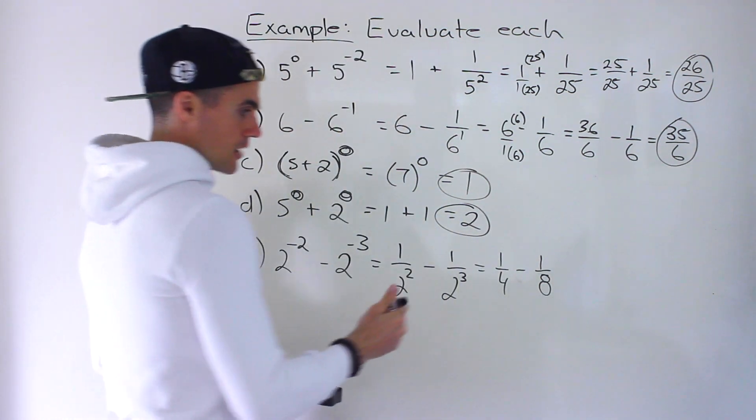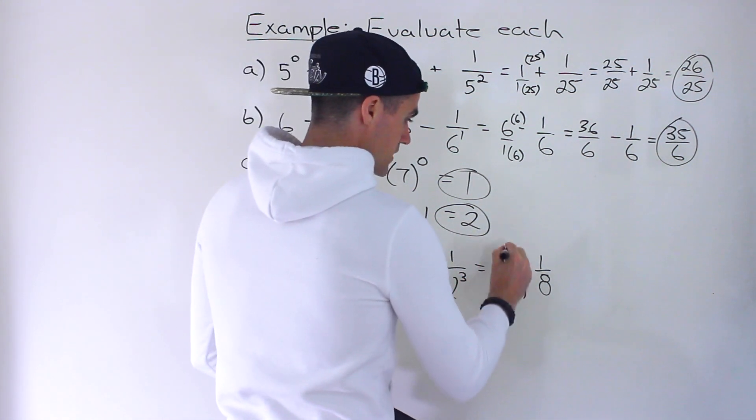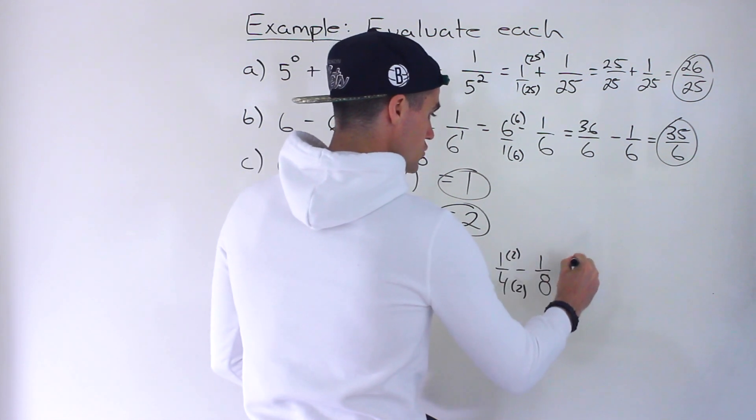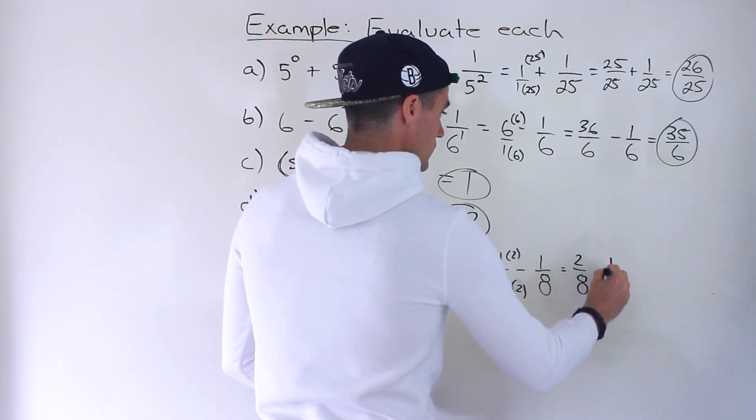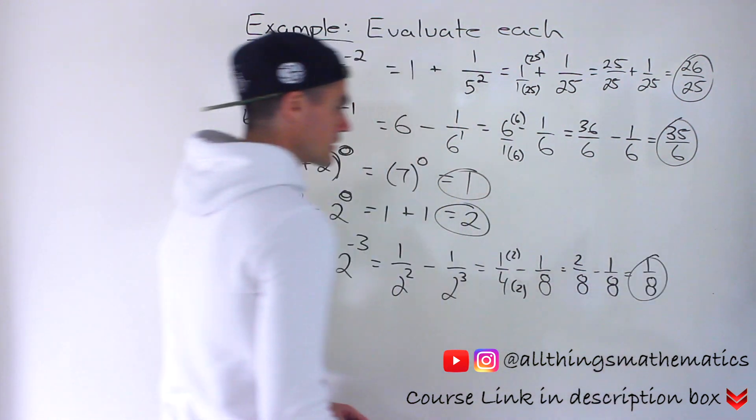And then common denominator between this would be 8, between 4 and 8. Most common denominator is 8. So we multiply this by 2, multiply this by 2. So we'd have 2 over 8 minus 1 over 8, which would give us 1 over 8.